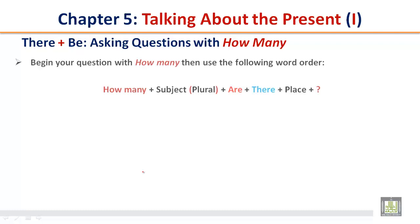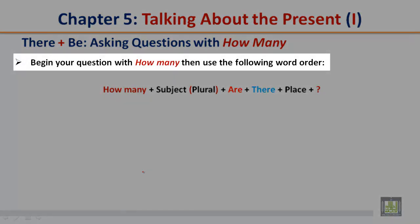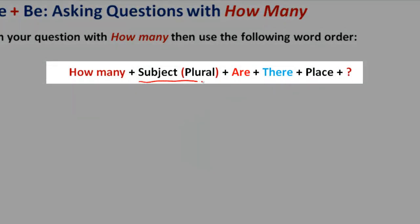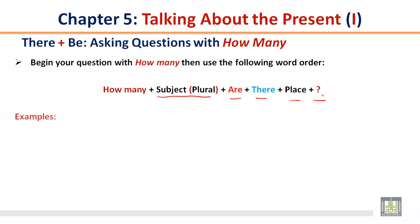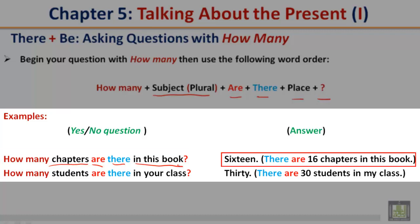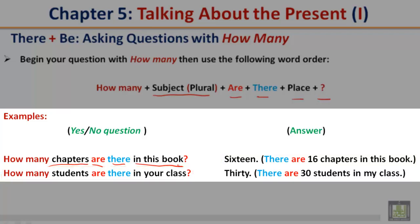There plus be — asking questions with 'how many.' Begin your question with 'how many,' then use the following word order: How many + subject (plural) + are + there + place. Examples: How many chapters are there in this book? Answer: 16. There are 16 chapters in this book. How many students are there in your class? Answer: 30. There are 30 students in my class.